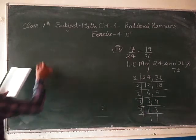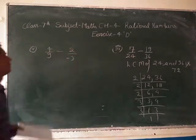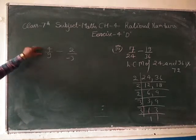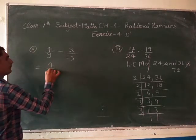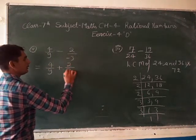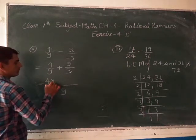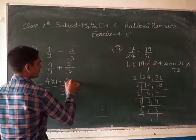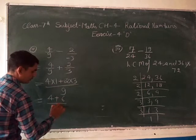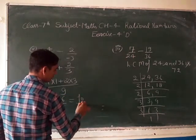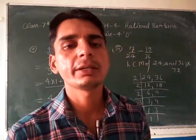Next part is 4 upon 9 plus minus 2 upon minus 3. Minus and minus makes plus, so this becomes 4 upon 9 plus 2 upon 3. LCM of 9 and 3 is 9. Multiply: 4 stays as 4, and 2 times 3 is 6. So 4 plus 6 upon 9 gives 10 upon 9 as the required answer. Thank you, have a nice day.